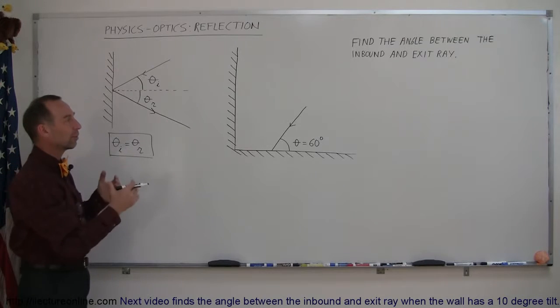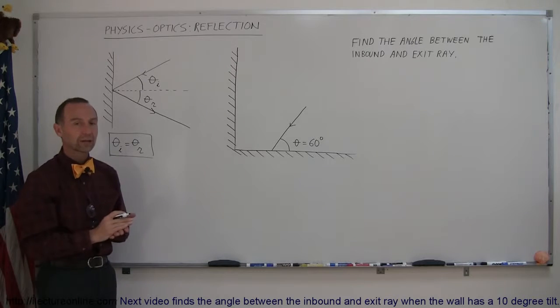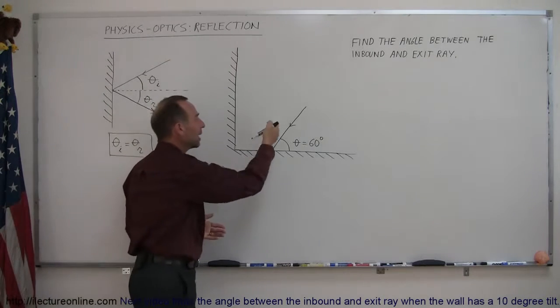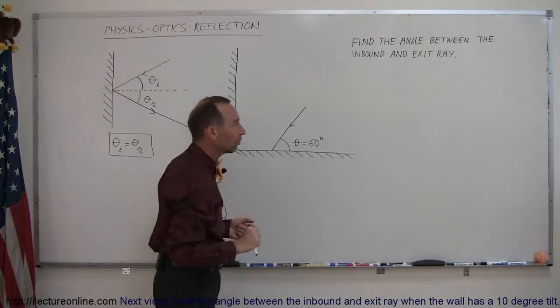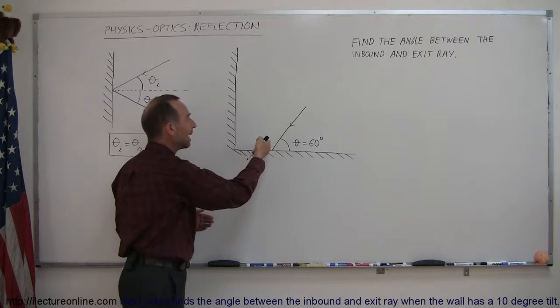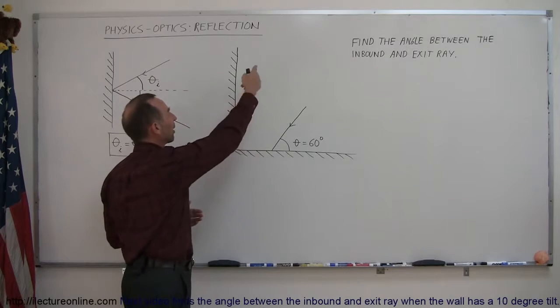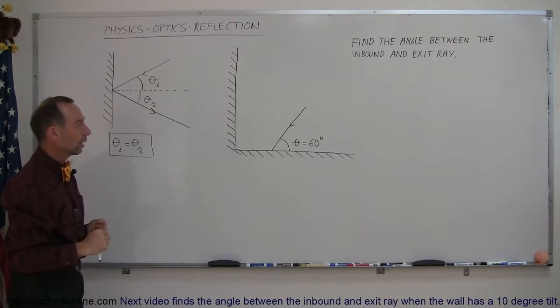But now can we apply it to something that's a little bit more complicated? So let's say we have what we call here a corner reflector, and we have an inbound ray of light at an angle of 60 degrees with the horizontal. What will be the angle between the inbound ray and the exiting ray after it bounces off these two surfaces that are at right angles to one another?